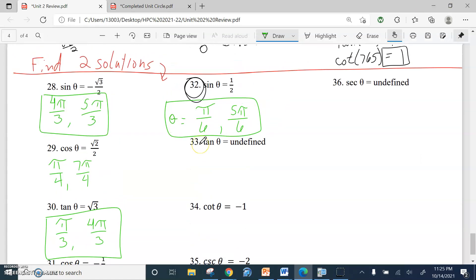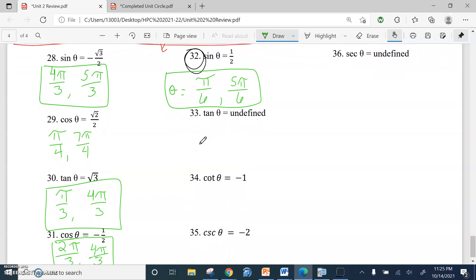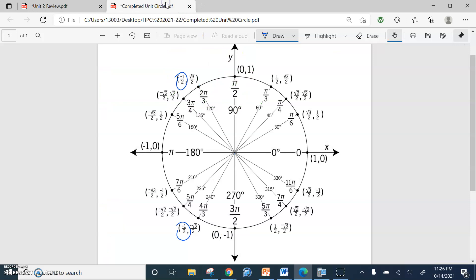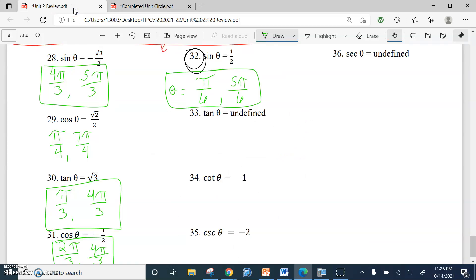32, hey, look, we already did 32. It was the introductory one. But again, we're looking for sine. Sine is the y-value, where is our y-coordinate equal to a half. Well, those are those smaller angles, because we had to go a much further distance out, and then just a little bit up.